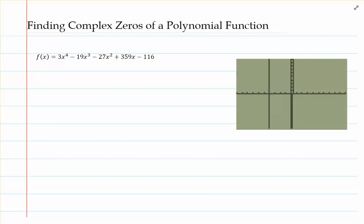The fundamental theorem of algebra says that whatever the degree of your polynomial function is, that's how many zeros you're going to have. They could be real, they could be non-real, a mixture of those, they could be duplicated. But all in all, they're going to be that many zeros. Basically for us, what that means in practical terms is that we are going to have 4 zeros.